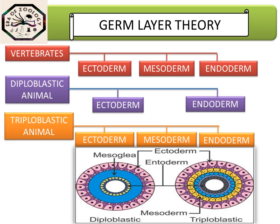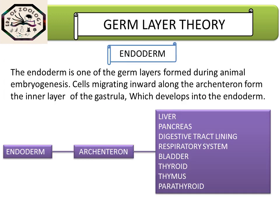Regarding the distribution of germ layers in different animals: vertebrates have ectoderm, mesoderm, and endoderm. Diploblastic animals, which are radially symmetrical, contain only ectoderm and endoderm. Triploblastic animals, which are bilaterally symmetrical, contain ectoderm, mesoderm, and endoderm. In the pictorial diagram, we can see that diploblastic animals have ectoderm and endoderm with no additional layer in between, whereas triploblastic animals have mesoderm as an additional layer between ectoderm and endoderm — this is the prime difference between triploblastic and diploblastic animals.